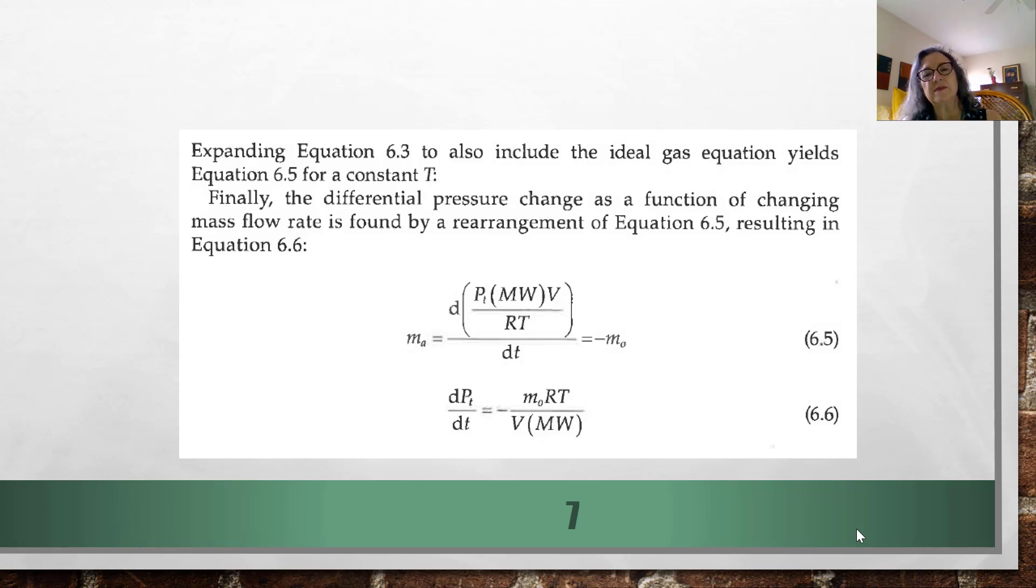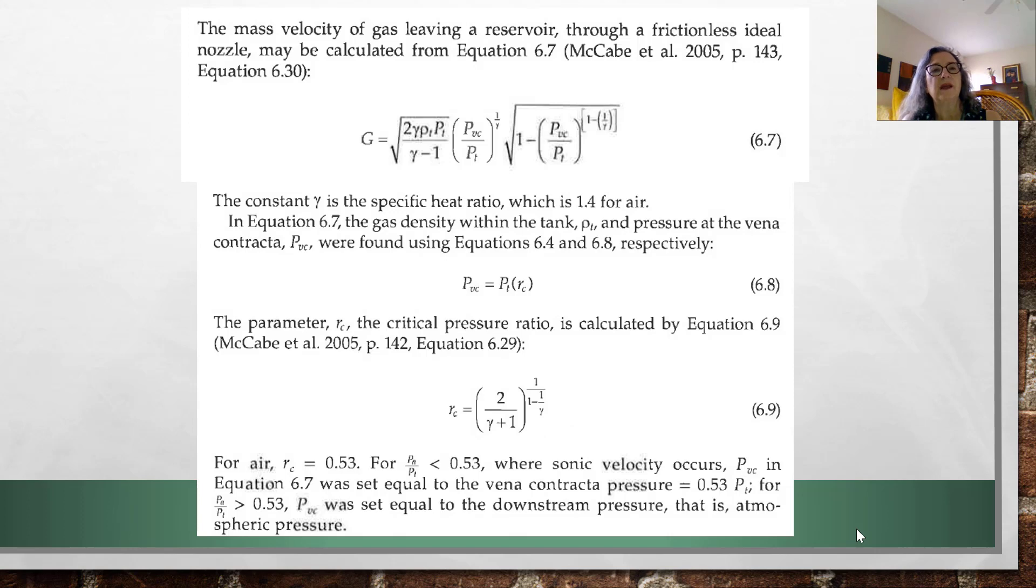Now what is the mass flow rate coming out of the tank? This theory is based on some things that you will be learning in your transport and operations classes, but the mass velocity through a nozzle can be derived in equation 6-7 here. You have the density in the tank, the pressure in the tank, and the pressure at the vena contracta.